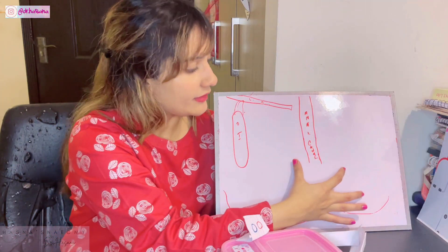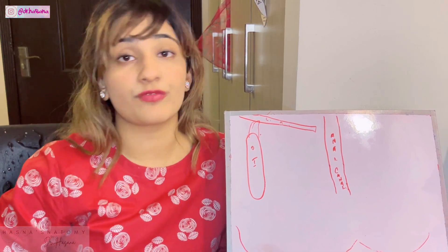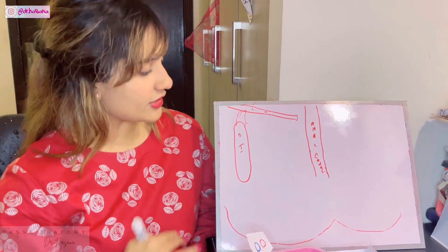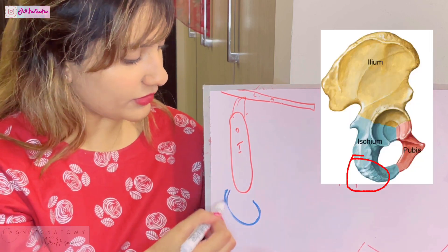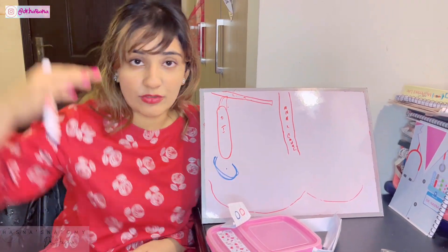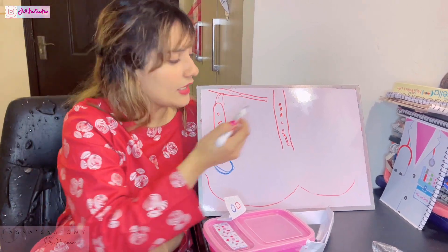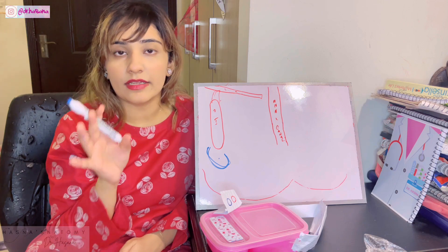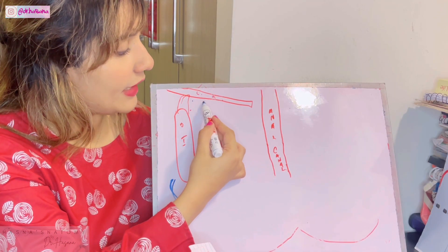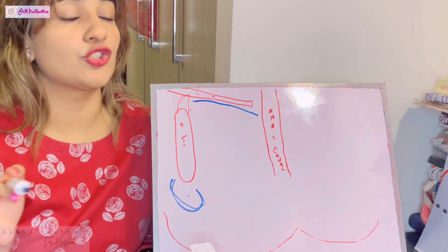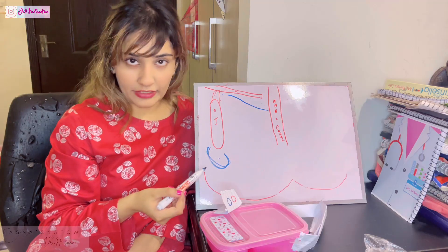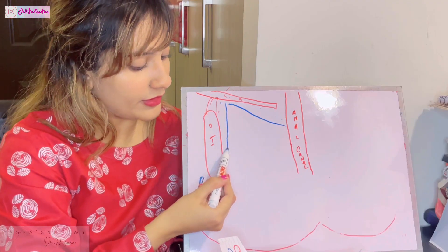The ischioanal fossa is a triangular-shaped fossa located on either side of the anal canal, and it has very important boundaries that will be asked in the exam. Laterally here comes your ischial tuberosity, and above that is the obturator foramen covered with the obturator internus. On top we have the levator ani muscle — that is the pelvic diaphragm — and below it lies your perineum. Everything in the human body is covered by sleeve-like things called fascia. The levator ani has the inferior pelvic fascia inferior to it and the superior pelvic fascia superior to it.